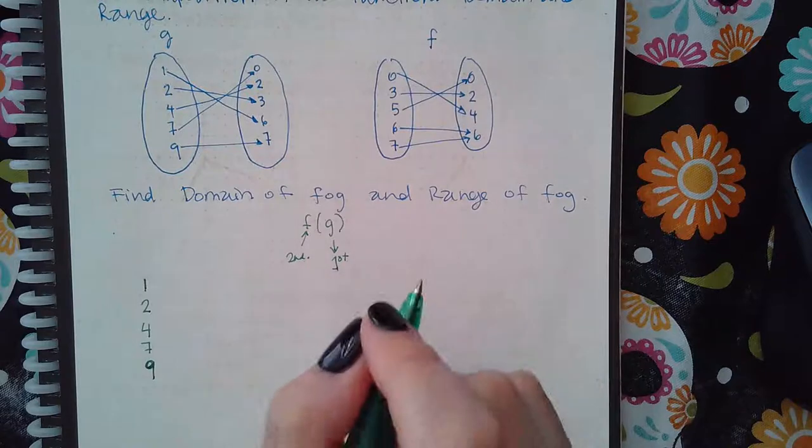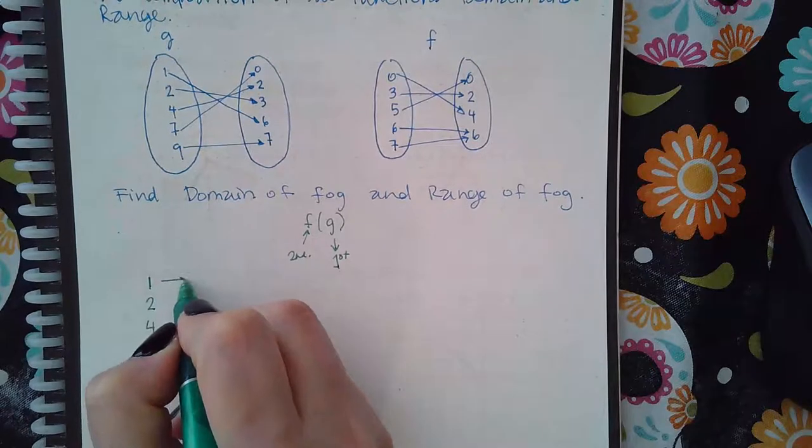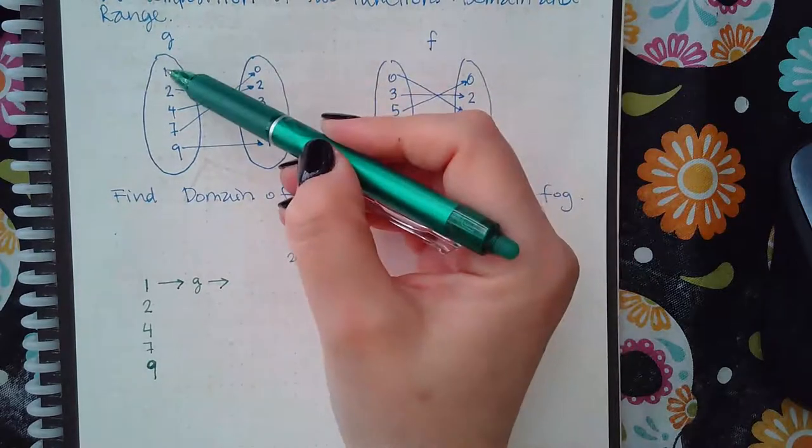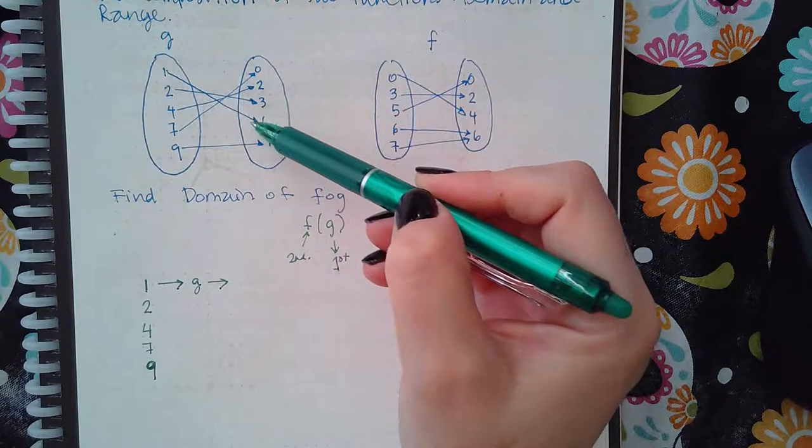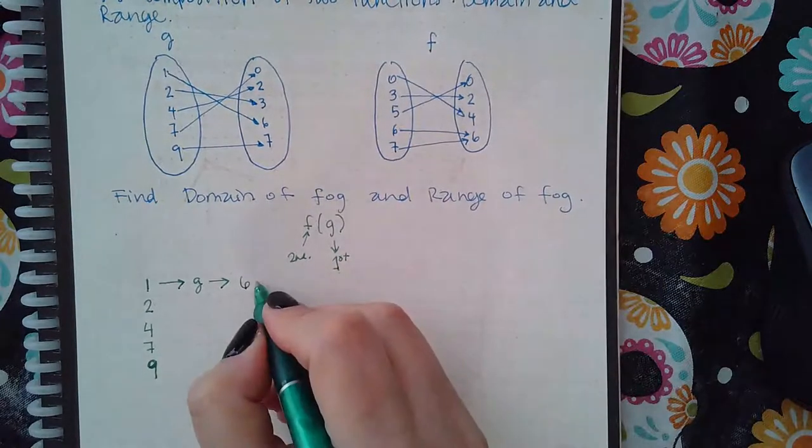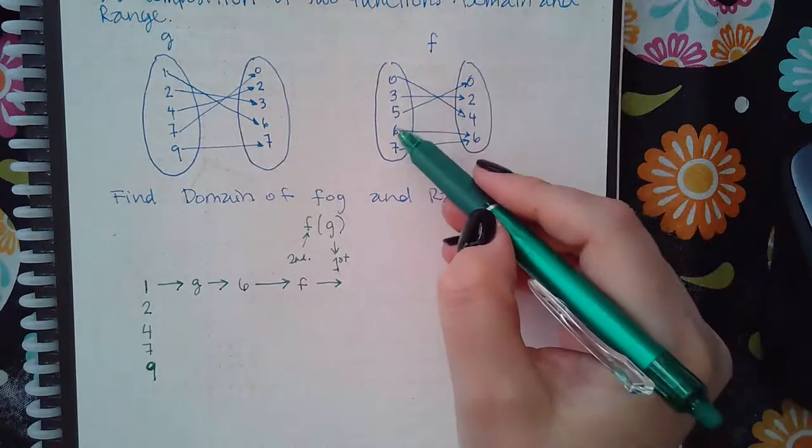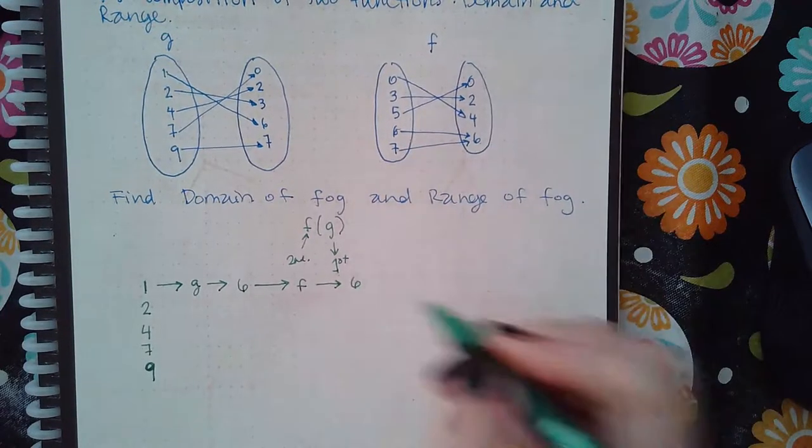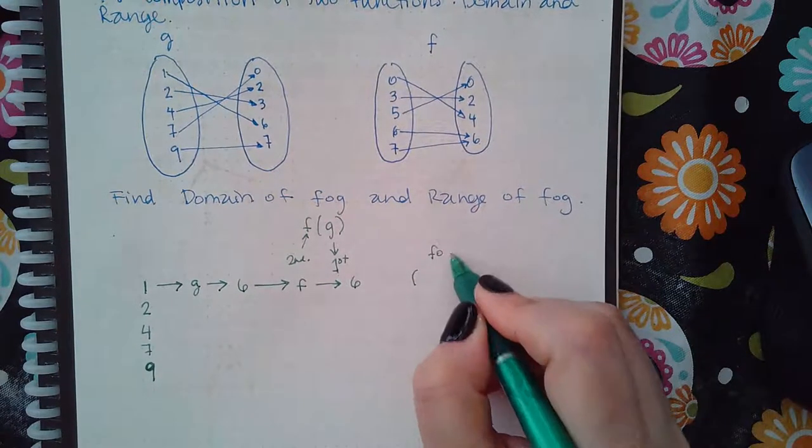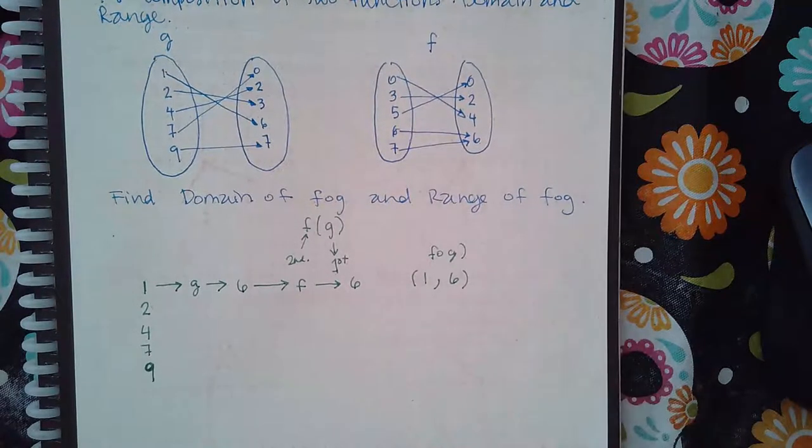How do I know which ones are and which ones aren't? You have to go through this whole process. So if I plug one into the g function, what comes out? If I plug one into the g function, my output is going to be a six. Then what happens if I plug that six into the f function? Here's the six and what, still a six. So that means that for f of g, a one went in and a six at the very end came out.